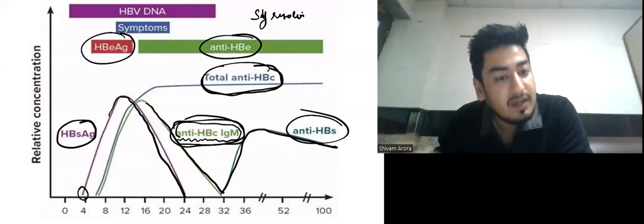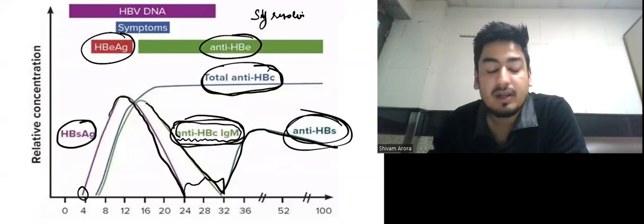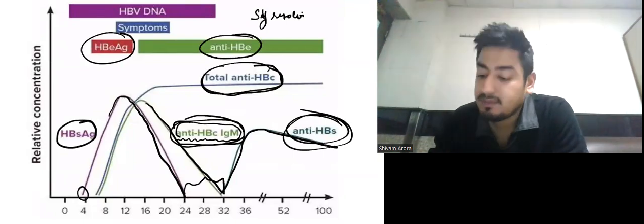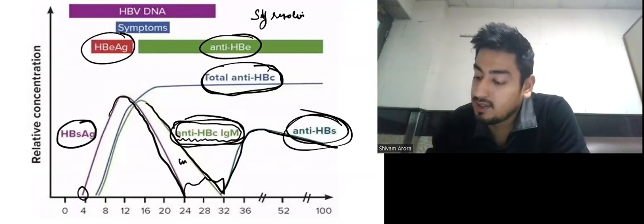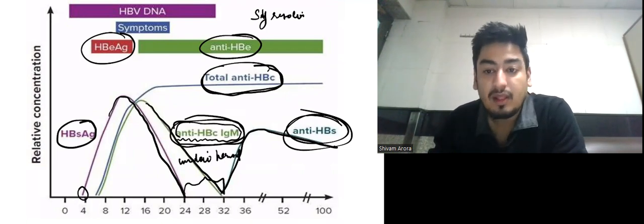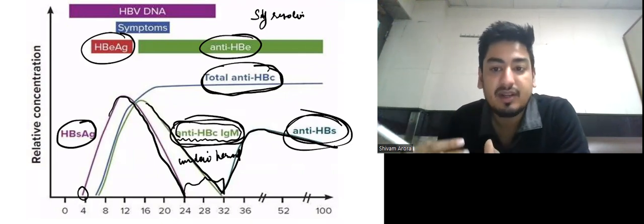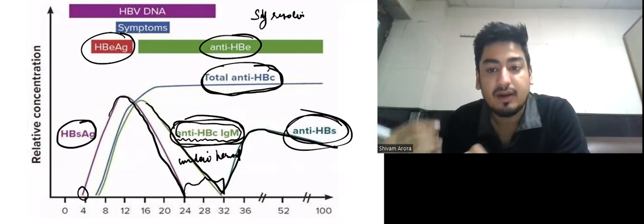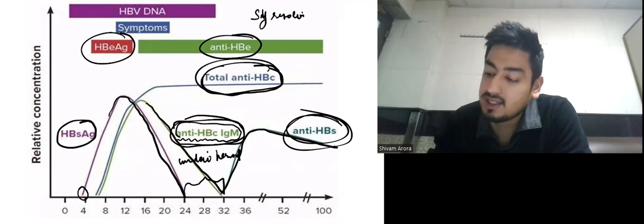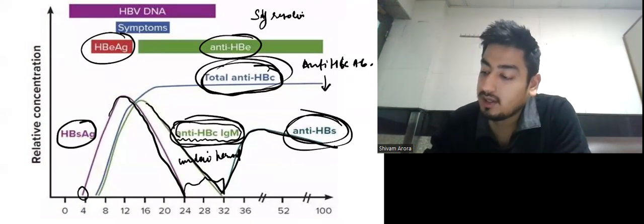If anti-HBs appears, HBsAg will disappear. But there is a window period — the period between the disappearance of HBsAg and before the appearance of anti-HBs. In this window period, the only blood parameter that will help us detect that the patient has Hepatitis B is anti-HBc. So anti-HBc antibody is the marker in the window period.